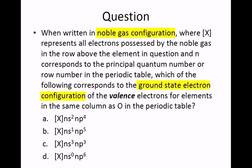On closer reading, we are looking for the noble gas ground state electron configuration of the valence electrons for elements in the same column as oxygen.